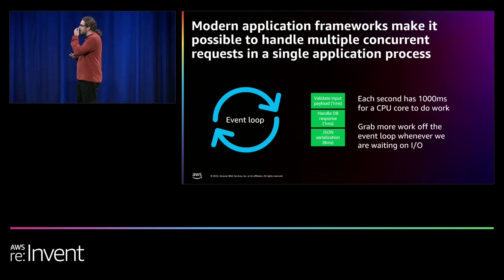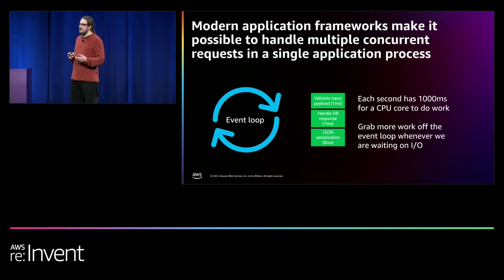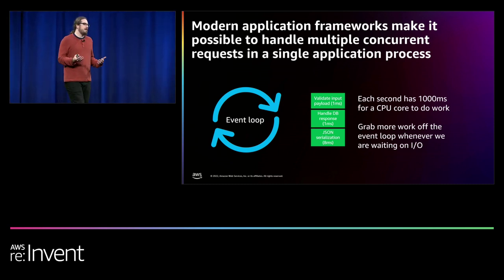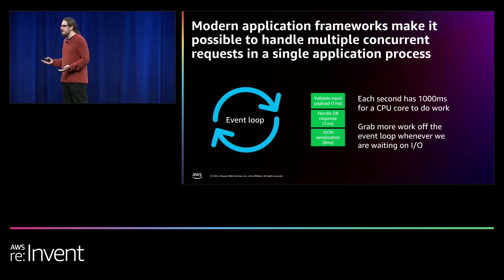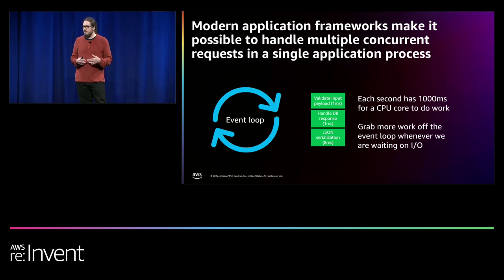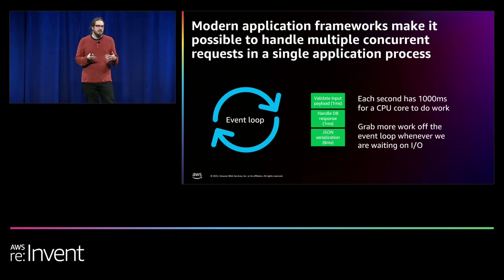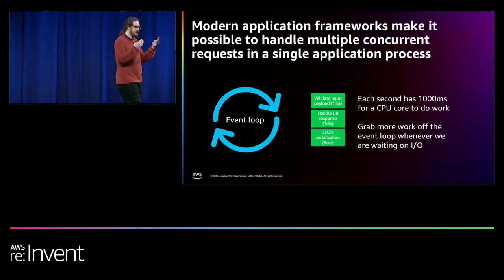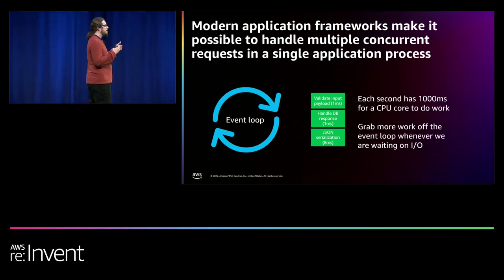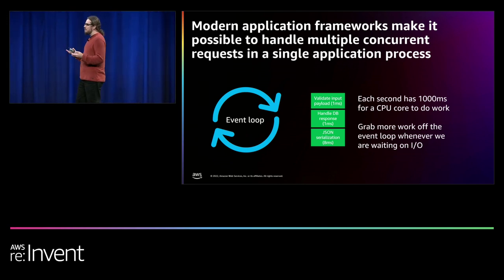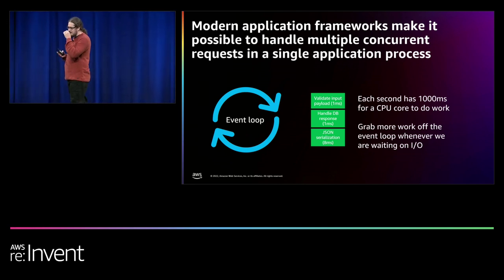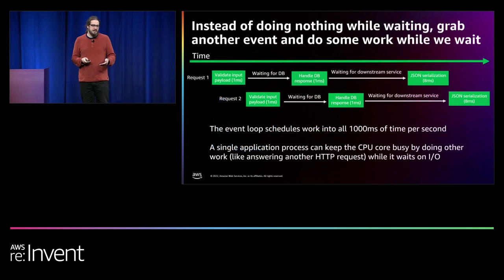Every modern application language has the concept of an event loop — a way to allow a single process to work on multiple concurrent requests at a time. Think of each second as having 1,000 milliseconds of time. If I split my code into small chunks of 1 ms, 1 ms, 8 ms, I can schedule those chunks into every millisecond of those 1,000 milliseconds. Whenever the CPU would otherwise be waiting doing nothing, I can grab another piece of code to do and fill that time.